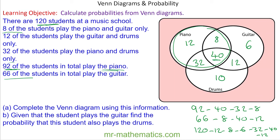Given that the student plays the guitar, find the probability that the student also plays the drums. Pause the video and unpause when ready. Given that the student plays guitar, that is a total of 66 people. They also play drums — that would be guitar and drums only (12) plus all three (40) — which is 52 out of 66, simplifying to 26 over 33.